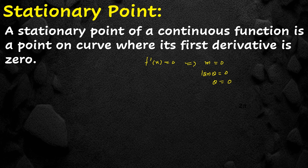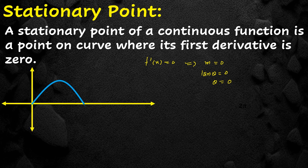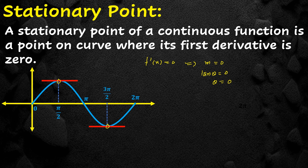These stationary points occur where the tangent is parallel to the x-axis. Looking at a graph of a portion of sine x, we note that at x = π/2 and x = 3π/2, if we draw the tangent lines, these are parallel to the x-axis. So these are our stationary points.